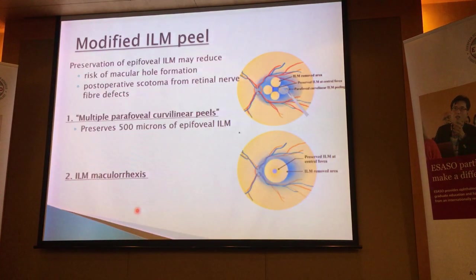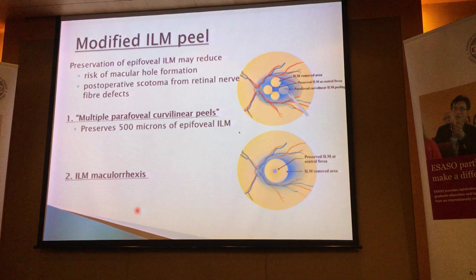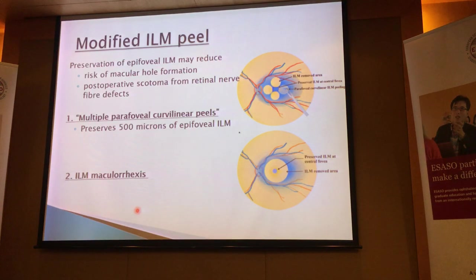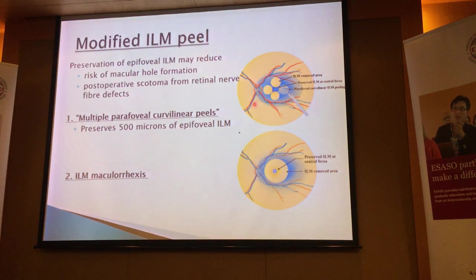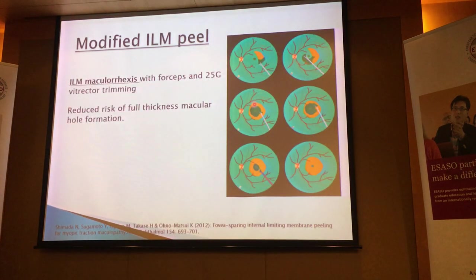So what are modified ILM peels? What we want to achieve is to preserve the epifoveal ILM — we don't want to touch it, we leave it alone. There are different ways of doing this. You can do what we call a macular rhexis, very similar to how you would do your capsular rhexis in cataract surgery. Or you can do multiple small curvilinear peels around the foveal region such that they overlap, and you end up with an area over the fovea that's untouched. How do we do a macular rhexis? I prefer this method because I find it's much more controlled and easier to do.